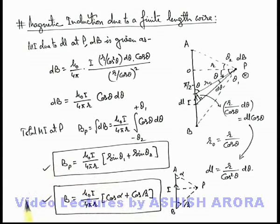So you must be careful about these results, which are the magnetic induction due to a finite length wire in the surroundings. Direction can be simply obtained by using right hand thumb rule.